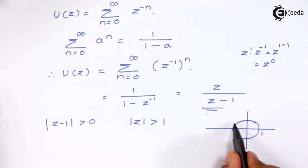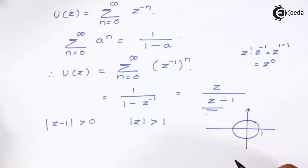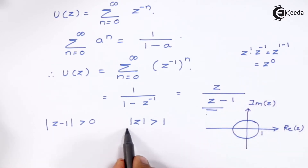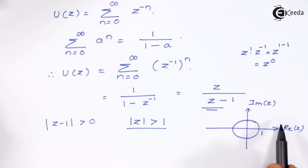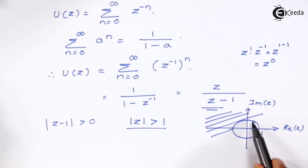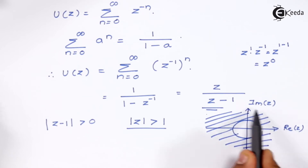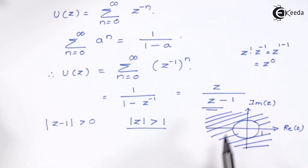Let us assume this is the unit circle, with the imaginary part of z on one axis and the real part of z on the other. According to the ROC statement, |z| > 1, which means our ROC is available outside the unit circle. The ROC of u(n) is available outside the unit circle.